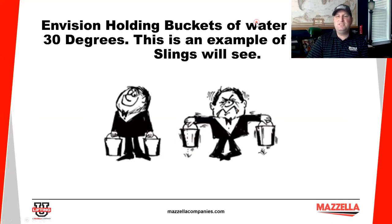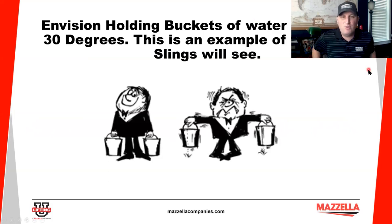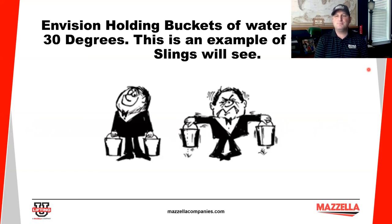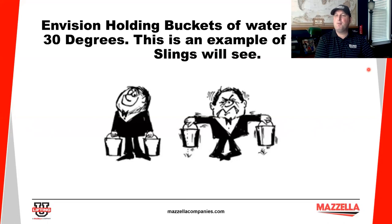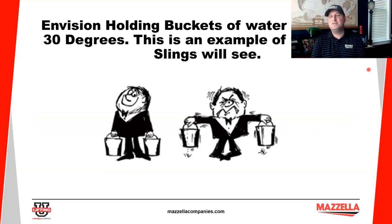Now we're going to talk about tension when it comes to slings and what that does for the working load limit. Envision yourself holding two five-gallon buckets of water with your arms out at 60 degrees, then 45 degrees, and then 30 degrees. What if I asked you to hold those buckets of water out for five minutes? At 60 degrees you could probably do it, but at 45 and 30 degrees you'd feel what kind of tension that would put on your shoulders. Remember this concept as we work through de-rating slings properly.